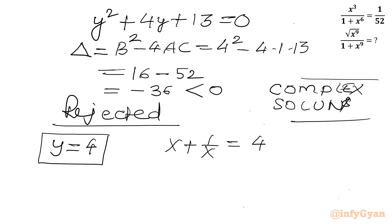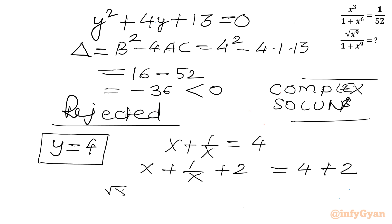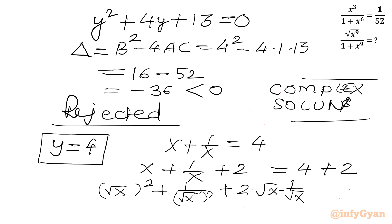Adding 2 to both sides: x plus 1 over x plus 2 equals 6. We can write the left side as (√x)² plus (1/√x)² plus 2 times √x times 1/√x, which is the formula (a + b)² where a is √x and b is 1/√x. So (√x + 1/√x)² equal to 6.